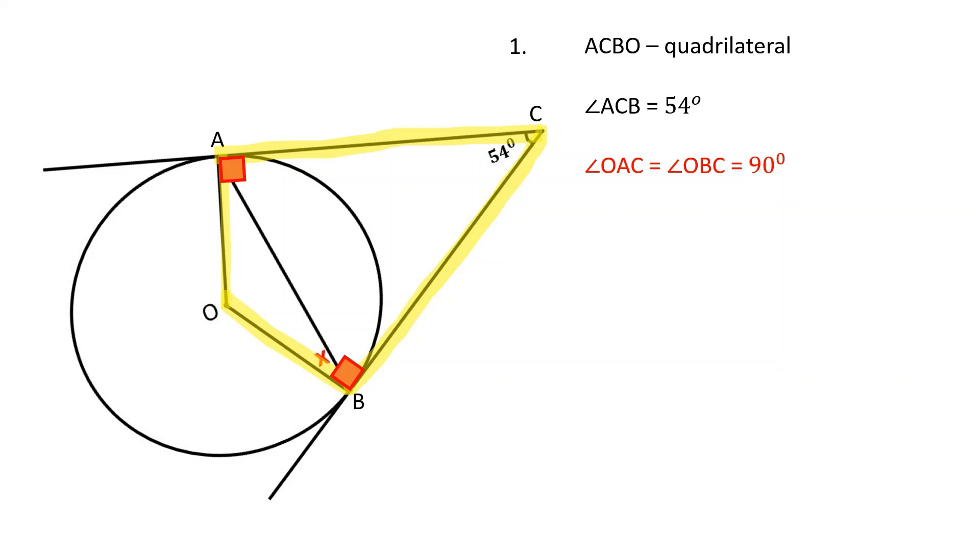Angle OAC is equal to angle OBC and equal to 90 degrees because the radius of a circle is perpendicular to the tangent line through its end point on the circle's circumference. Since the sum of the interior angles of a quadrilateral is 360 degrees, we can find angle AOB, which is equal to 126 degrees.